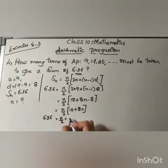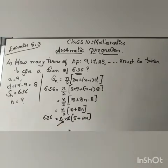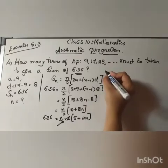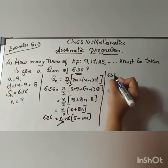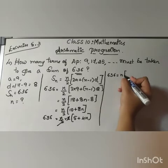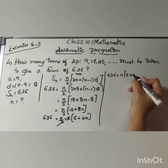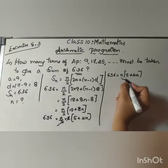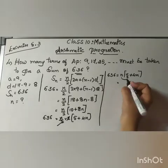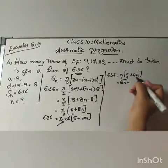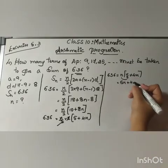Let me take a common term. Since n by 2 as it is, 636 will remain the same. If I take 2 as common, I remain with 5 plus 4n. So I can cancel 2 and 2. That will be 636 equals n into (5 plus 4n). Let me multiply: n into 5 is 5n plus 4n into n is 4n square.